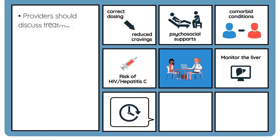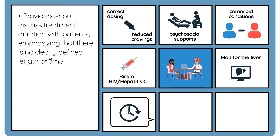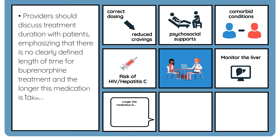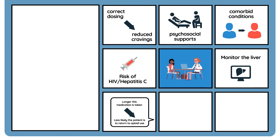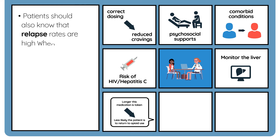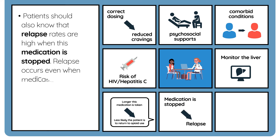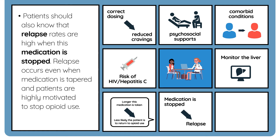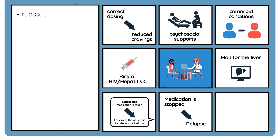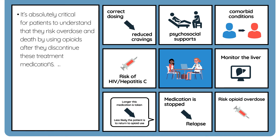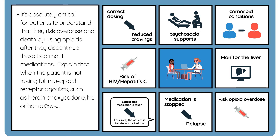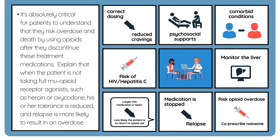Providers should discuss treatment duration with patients, emphasizing that there is no clearly defined length of time for buprenorphine treatment, and the longer this medication is taken, the less likely the patient is to return to opioid use. Patients should also know that relapse rates are high when this medication is stopped, even when medication is tapered and patients are highly motivated to stop opioid use. It's absolutely critical for patients to understand that they risk overdose and death by using opioids after they discontinue these treatment medications. When the patient is not taking full mu-opioid receptor agonists such as heroin or oxycodone, his or her tolerance is reduced and relapse is more likely to result in an overdose. Naloxone can be co-prescribed to prevent overdose deaths.